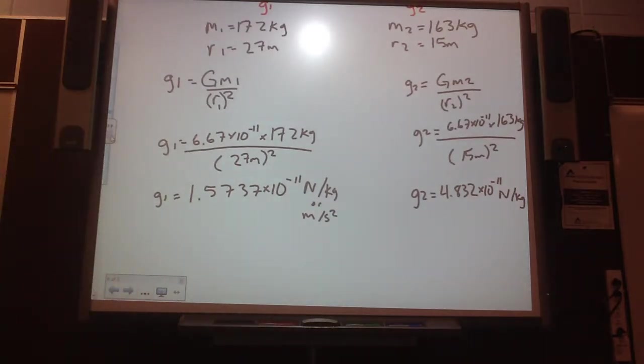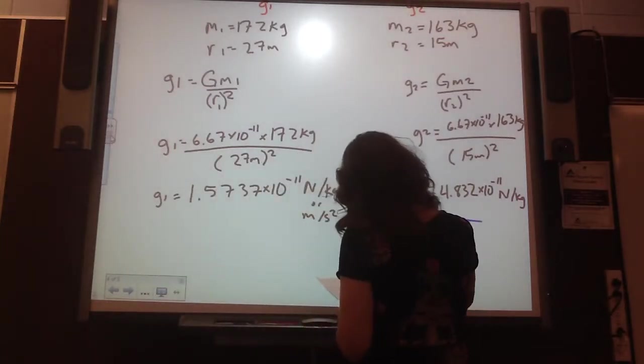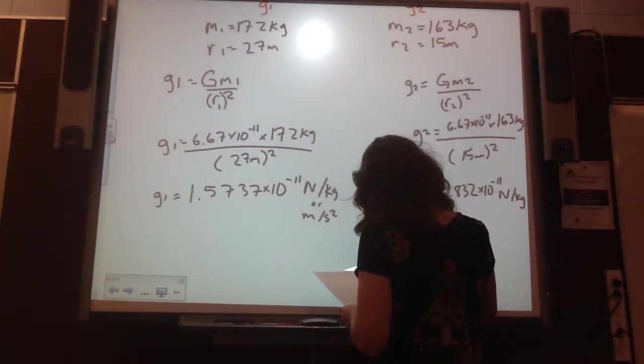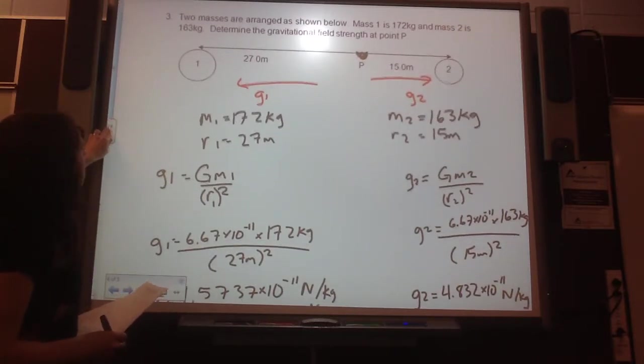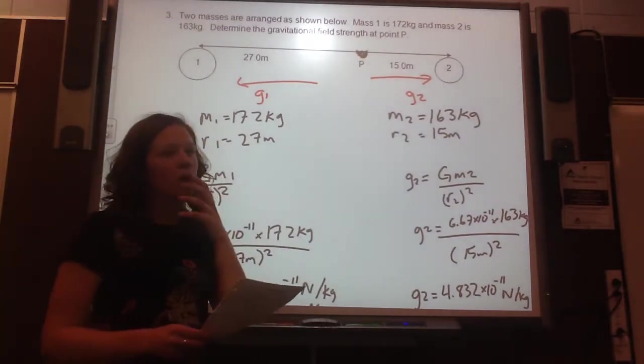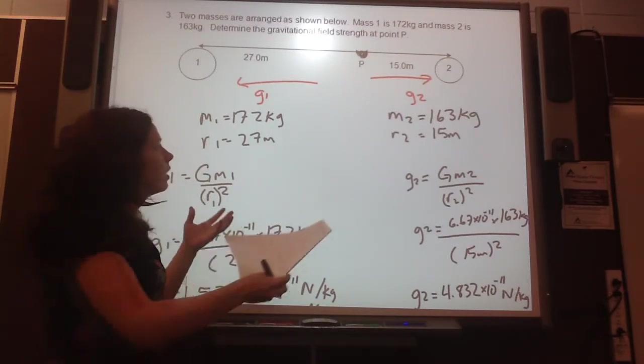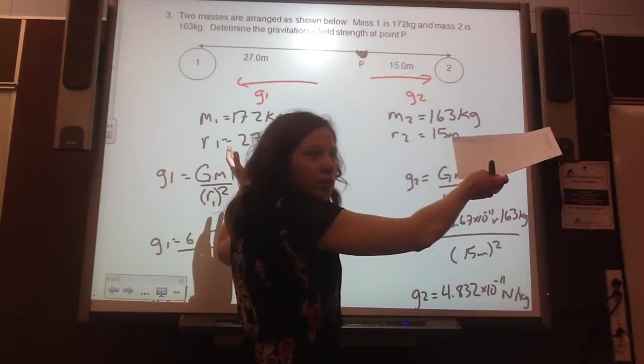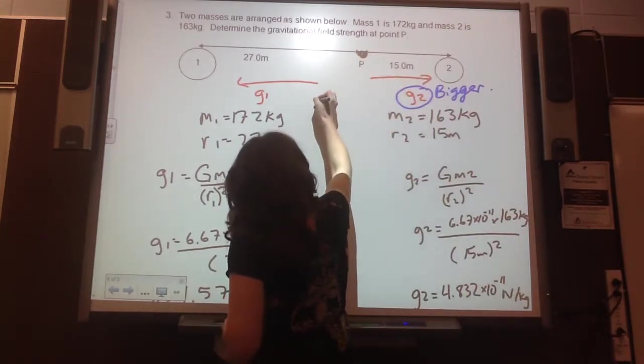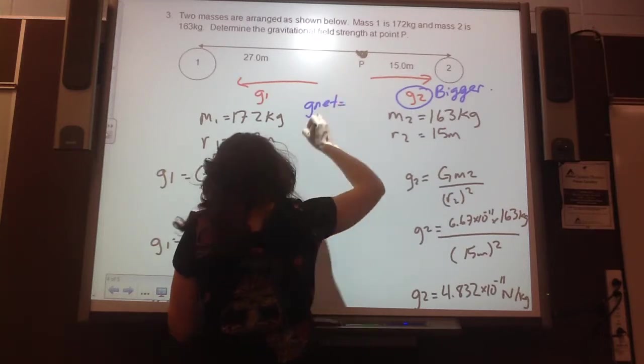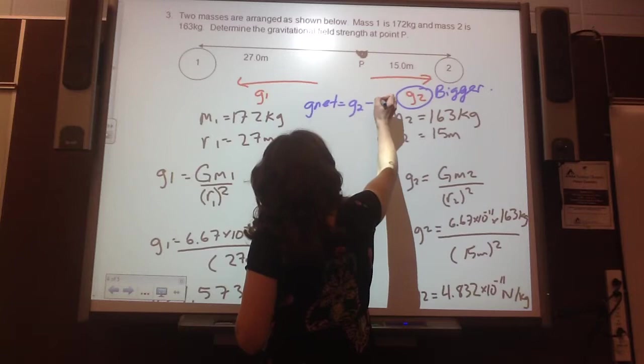Alright, so these are both times 10 to the negative 11, so I can look at the values. Which one is bigger? G2 is a bigger value. So when I think about my G net, which overall way is it going to be pulled? Which way, right or left? Which one was bigger? It's going to be pulled to the right. So this one is bigger, so it's going to be pulled to the right. So to find G net, I need to go G2 minus G1.